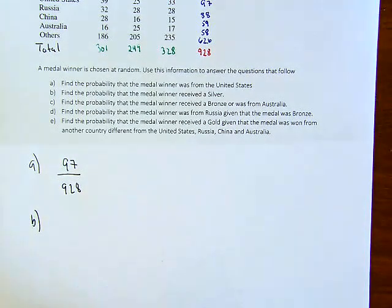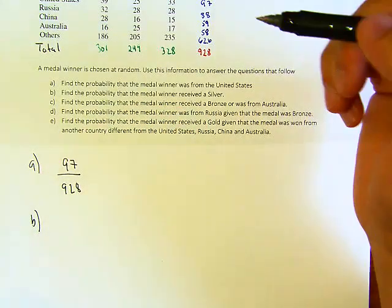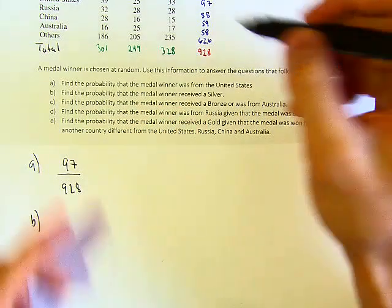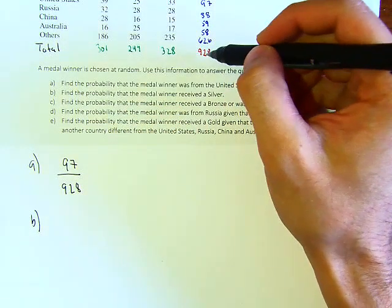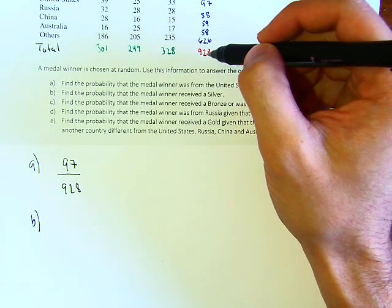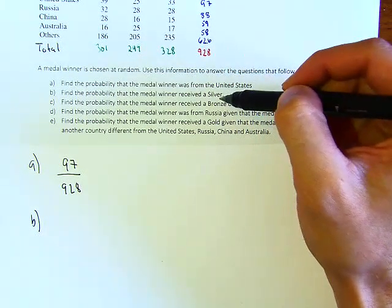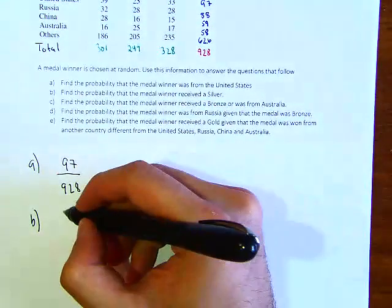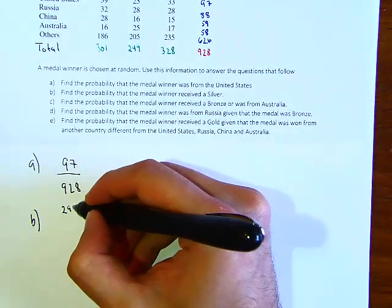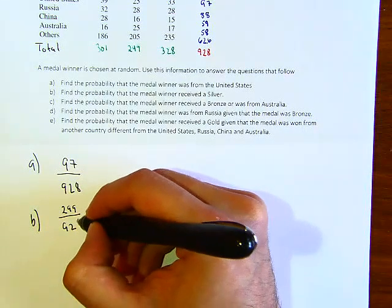Letter B says find the probability that the medal winner received the silver. If somebody was picked at random out of the 928, the probability that they received silver would be 299 over 928.